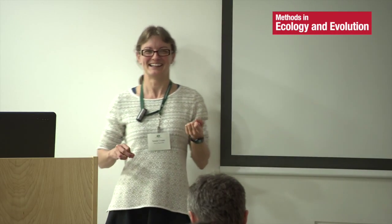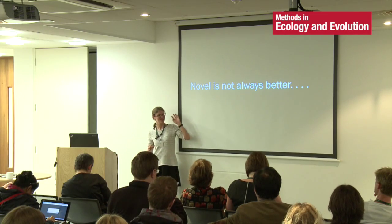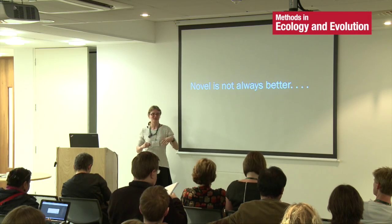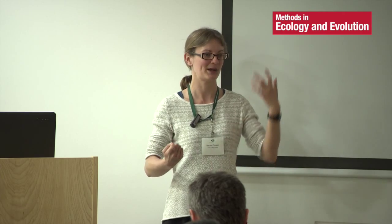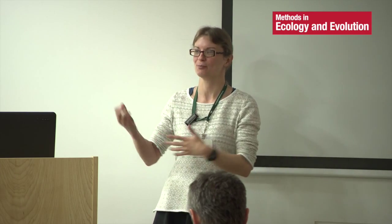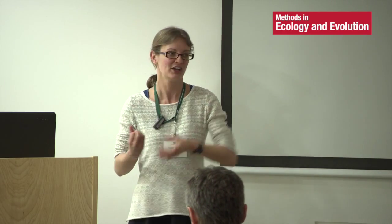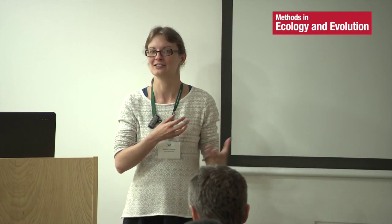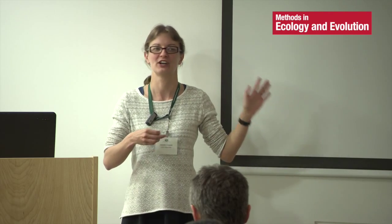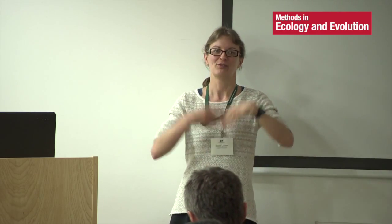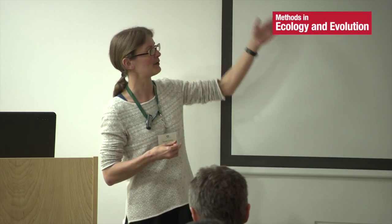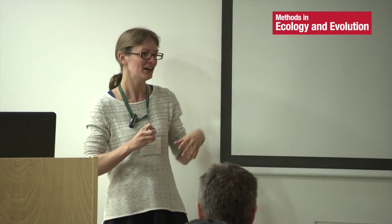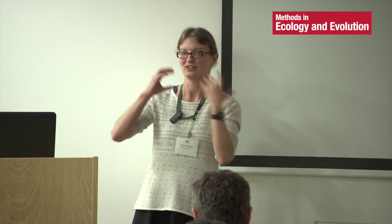A particular bugbear of mine is that novel is not always better. A lot of journals only really want to publish novel methods, so you try to publish an improvement to an old method, a critique, or some kind of way of testing the assumptions of that method and find it much harder to publish than something shiny and new — partly because new methods get cited a lot more. But if you look into the phylogenetics literature, it's mostly incremental improvements. We're still inferring phylogenies, we're just changing how we infer branch lengths and things like that. Do we want to focus on getting the methods we already know into a slightly more usable format?